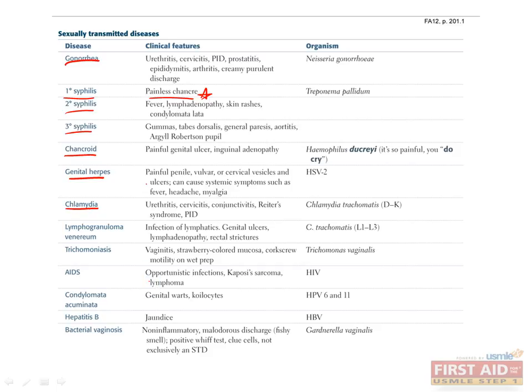Chlamydia is caused by Chlamydia trachomatis, in particular the D-serotype. It presents with urethritis, cervicitis, conjunctivitis, Reiter's syndrome, and pelvic inflammatory disease. Reiter's syndrome, also known as reactive arthritis, can also include urethritis and conjunctivitis. The mnemonic to remember Reiter's is that you cannot see, can't pee, and cannot climb a tree — referring to conjunctivitis, urethritis, and arthritis. The L1 through L3 serotypes of Chlamydia trachomatis can cause lymphogranuloma venereum, which presents with genital ulcers, lymphadenopathy, and rectal strictures.